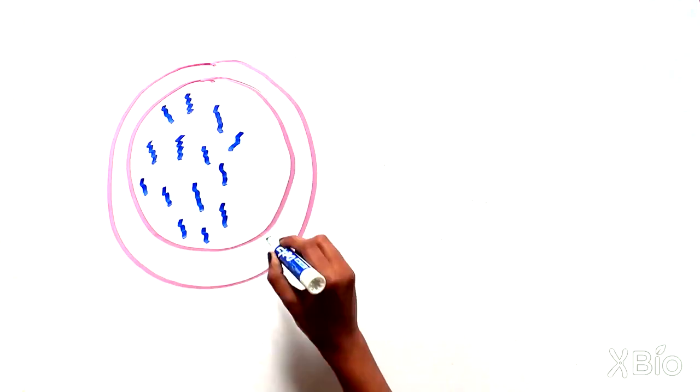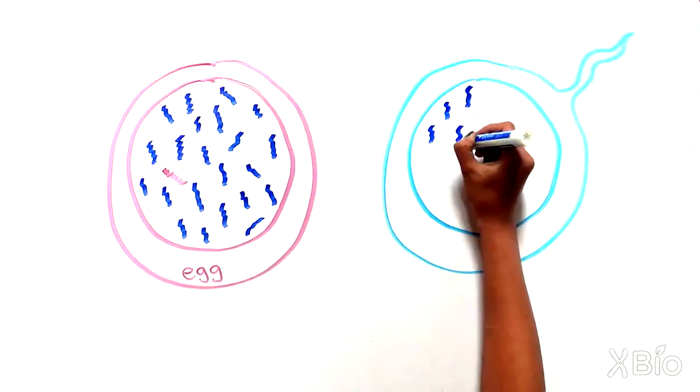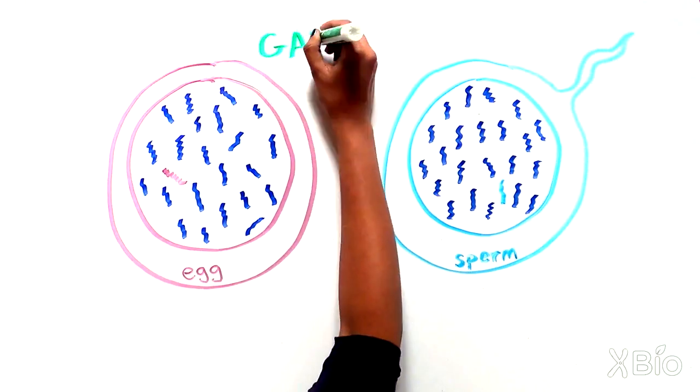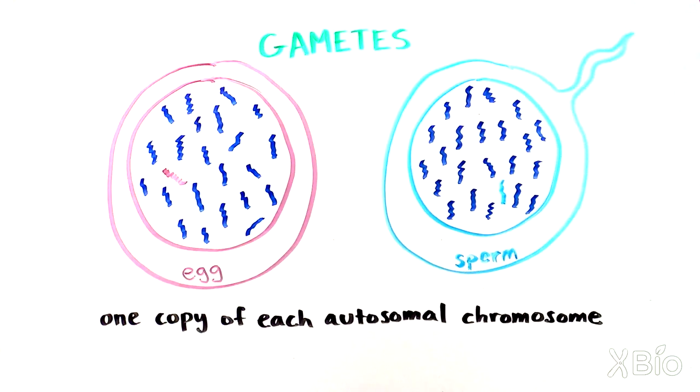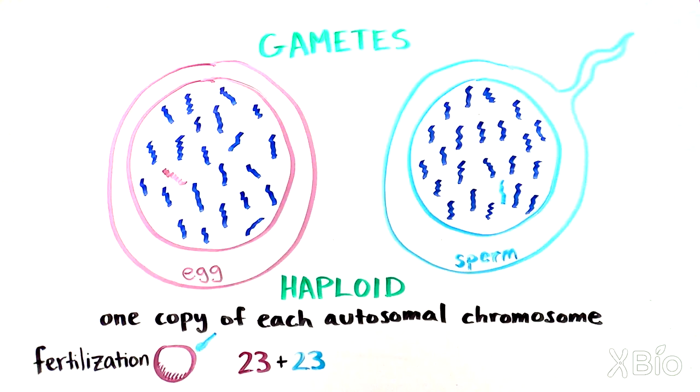The human sperm and egg, which are called gametes, are different in that they only have one copy of each autosomal chromosome and carry only one sex chromosome. Having just one copy makes gametes haploid. When a sperm fertilizes an egg, there are now 23 pairs of chromosomes, or 46 in total.